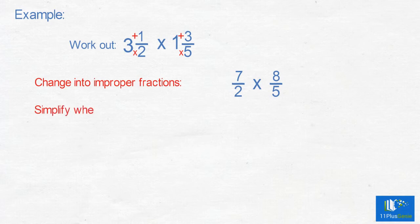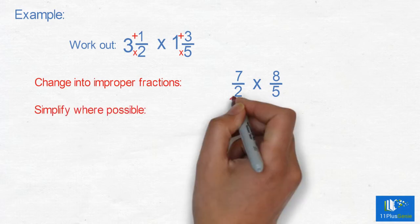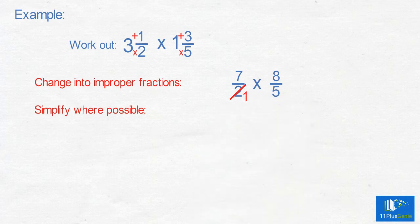Simplify where possible. 2 can go into 2 and 8. 2 into 2 is 1 and 2 into 8 is 4.